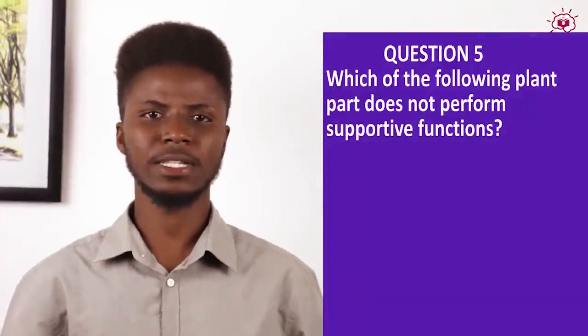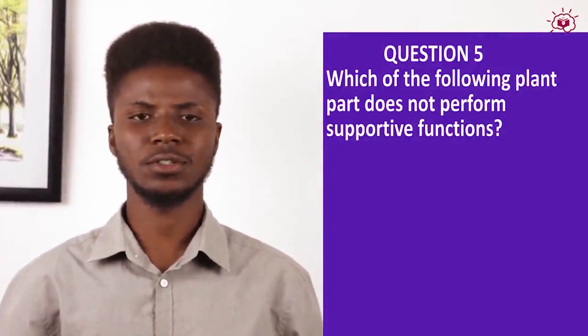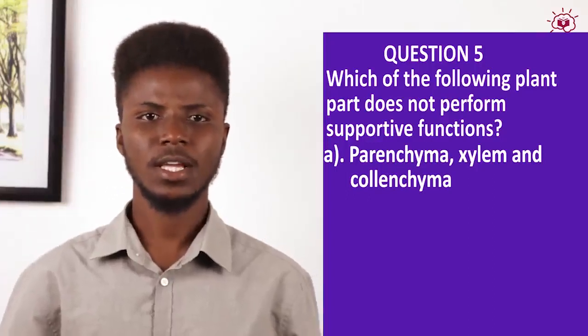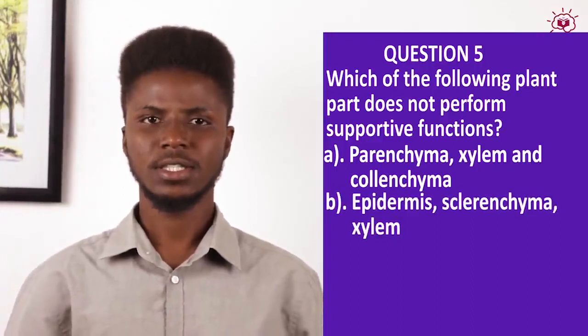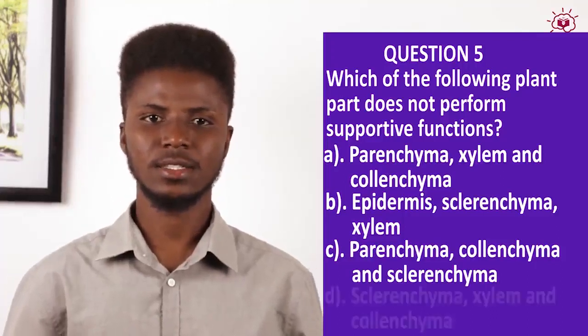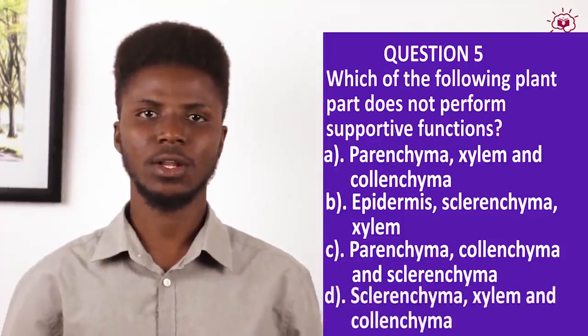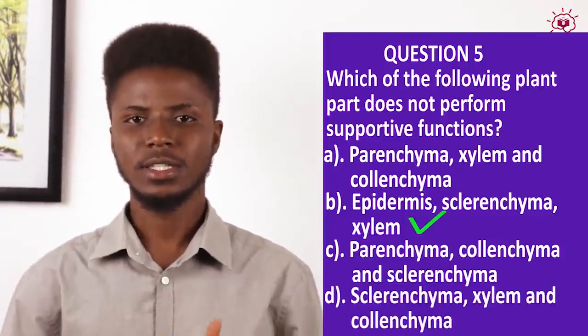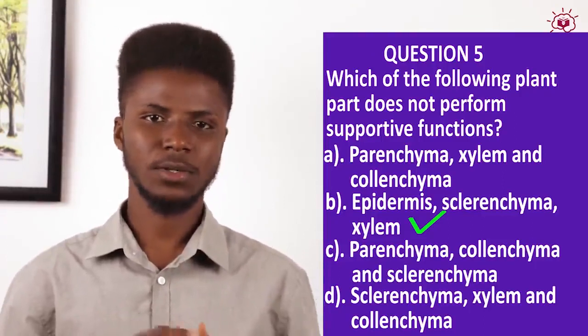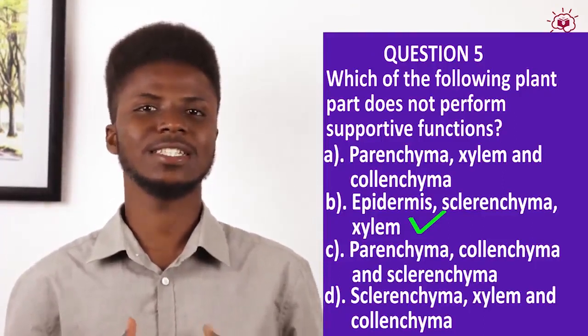Question 5: Which of the following plant parts does not perform supportive functions? Options include parenchyma, xylem, colenchyma in one group, and epidermis, sclerenchyma, xylem in another. The answer is the group containing epidermis — the epidermis is the odd one out, as it is the outer skin layer. The rest are supportive tissues. And with that, we've come to the end of the topic of tissues and supporting systems in plants and animals. See you next time.